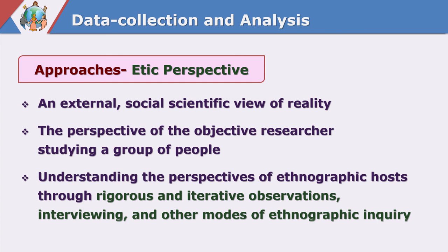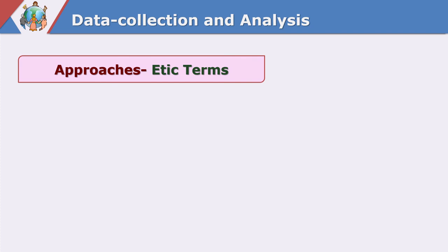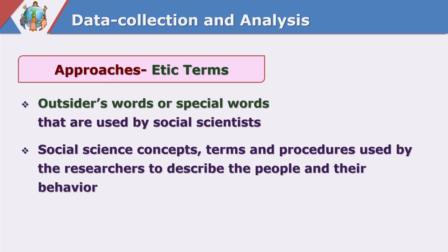Observations, interviewing, and interpreting through ethnographic inquiry give us the etic perspective. Terms coined by researchers for describing, studying, analyzing, and interpreting a particular culture are known as etic terms. These are outsiders' terms — social scientists' terms. Social science concepts, terms, and procedures used by researchers to describe people and their behavior are therefore known as etic terms.